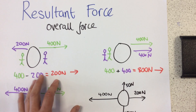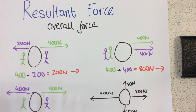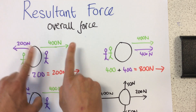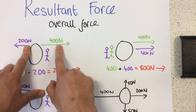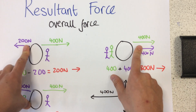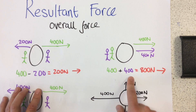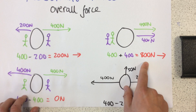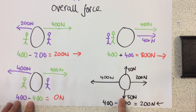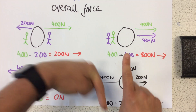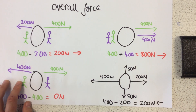Key things to remember: resultant force means overall force. If the forces are in the opposite direction, we take one away from the other. If they're in the same direction, we add them together. And if they are balanced — the same in either direction — they cancel each other out.